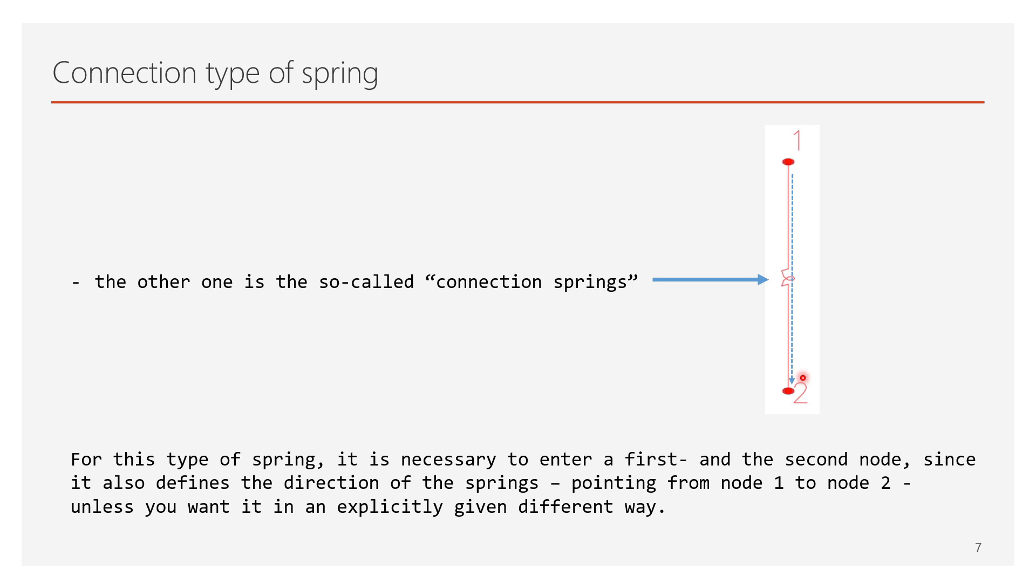In other words, it is also possible that even if the first and second node of the spring are defined as per the figure presented on the screen, still the direction of the spring pointing from the second node to the first, although it is the opposite direction of the default setting.